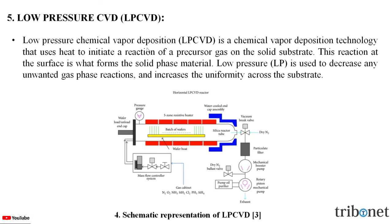Low pressure CVD is a type of CVD technology that uses heat to initiate a reaction of a precursor gas on a solid substrate. This reaction at the surface forms the solid phase material. Low pressure is used to decrease unwanted gas phase reactions and increase uniformity across the substrate. Here in this figure, we can see the schematic representation of the low pressure CVD process.